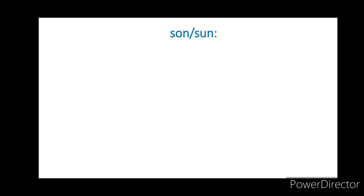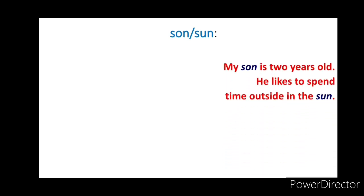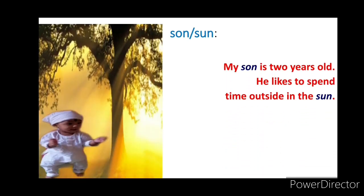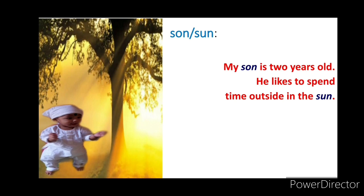S-O-N, 'son'. S-U-N, 'sun'. Example sentences: My son is two years old. He likes to spend time outside in the sun. Here, S-O-N means a male offspring — a boy in relation to either of his parents — whereas S-U-N is the star at the center of the solar system.